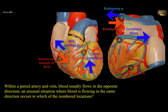At location 4, this is the continuation of the great cardiac vein in the coronary sulcus around the left border of the heart. The blood flows in this direction to reach the right atrium, where the coronary sinus opens. The coronary sinus carries deoxygenated venous blood back to the right atrium. Location 4 is accompanied by the circumflex branch of the left coronary artery, which also carries blood in the same direction around the heart. This is the unusual situation where blood is flowing in the same direction with the paired artery and vein.